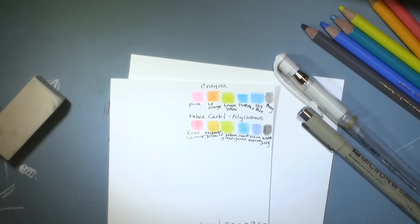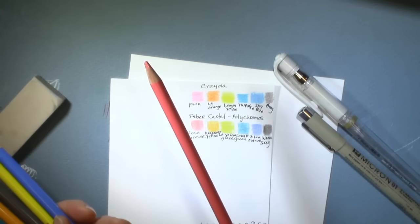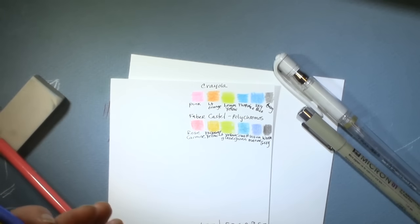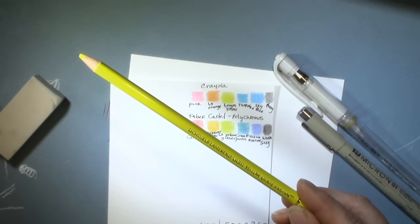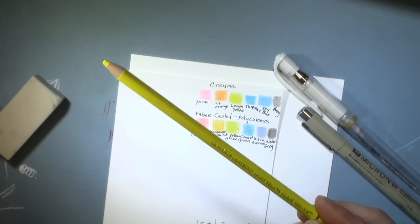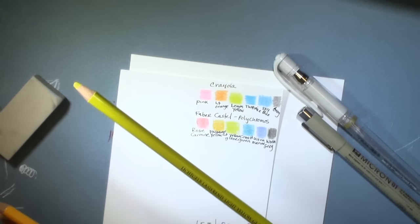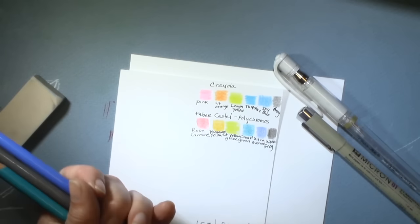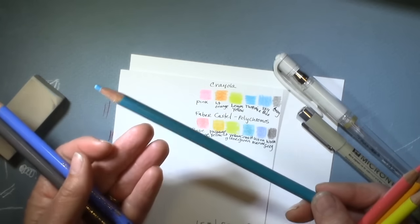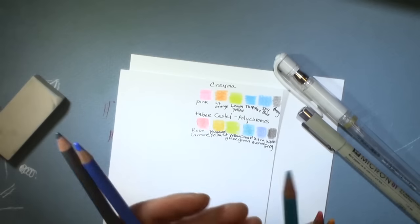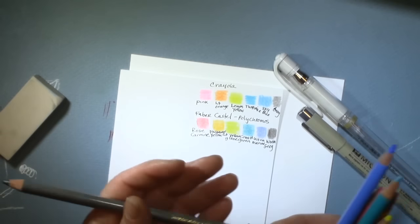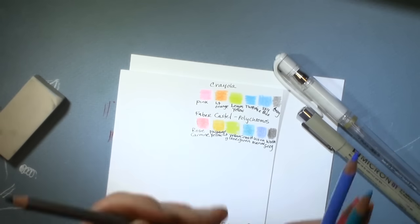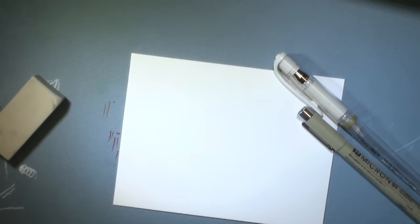For the Faber-Castell pencils what we are using is rose carmine, dark chrome yellow, the light yellow glaze which in this particular lighting looks a little bit greenish but it's not, it's a nice bright yellow. The cobalt green which is pretty much turquoise, the ultramarine, and the warm gray. So that's what we're going to use and we're going to get started.